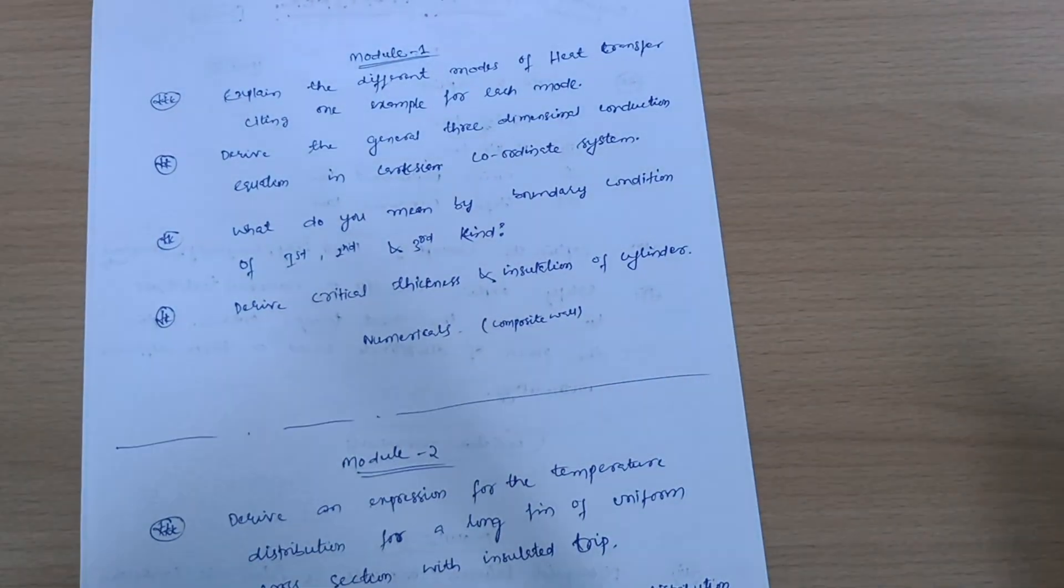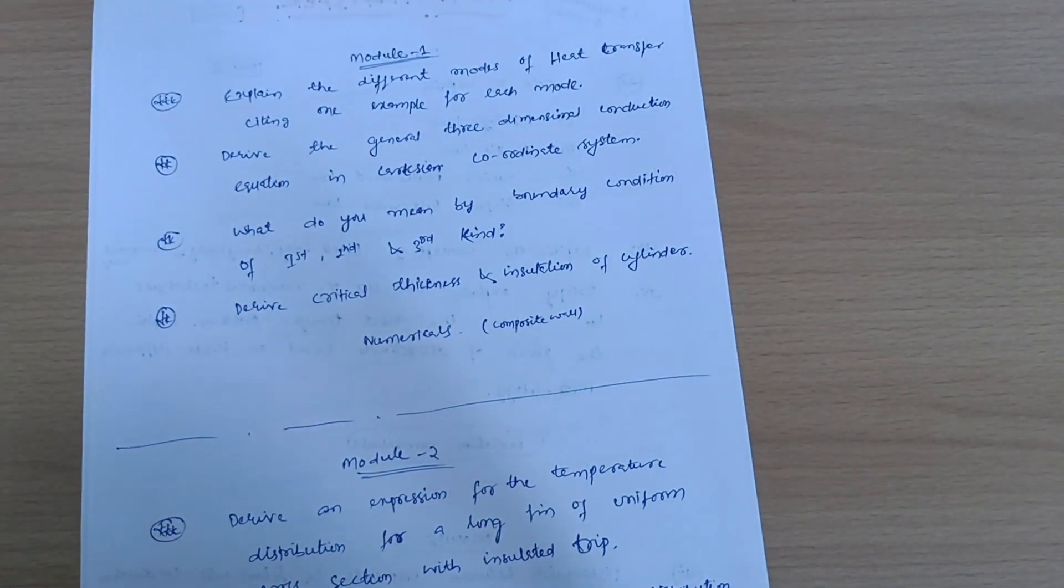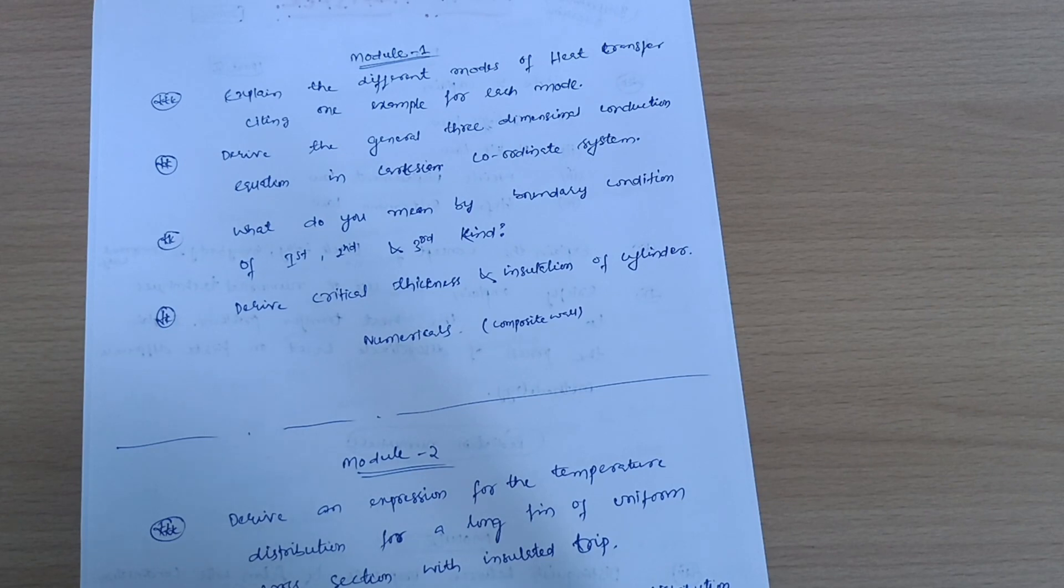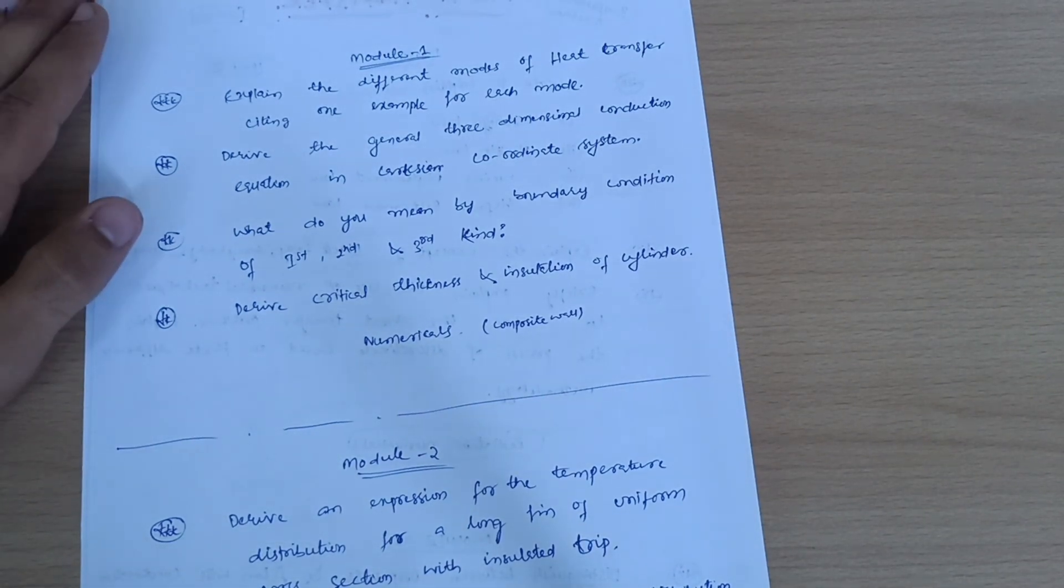You should go through numericals on composite walls - very simple numericals are here. You should not leave numericals at all. Even though this subject can be passed with theoretical portions, if you are going to the numerical part you can easily score more than 80 by attempting the numericals.